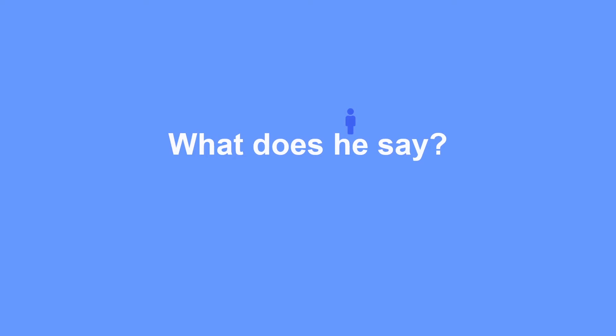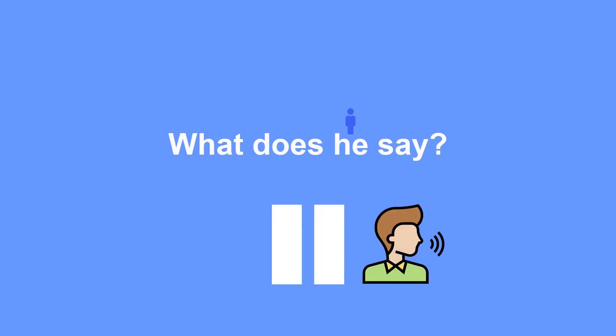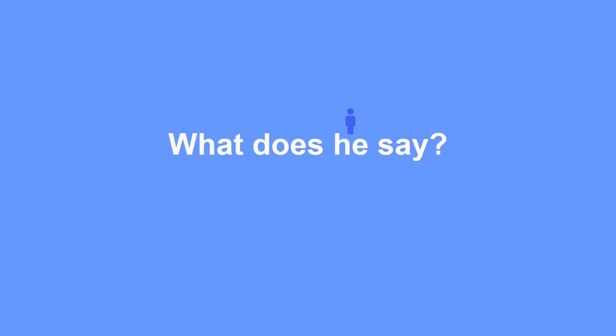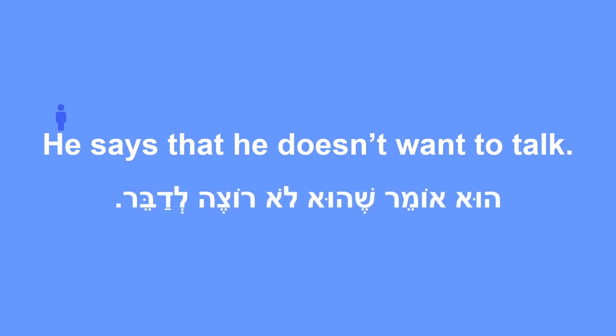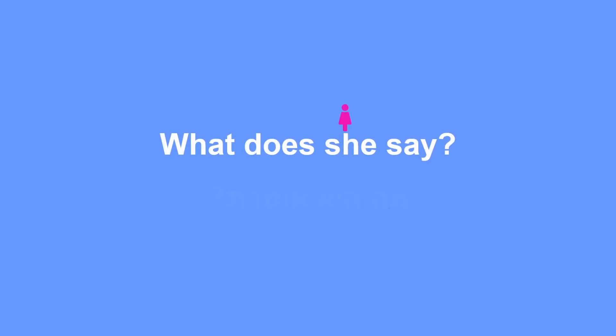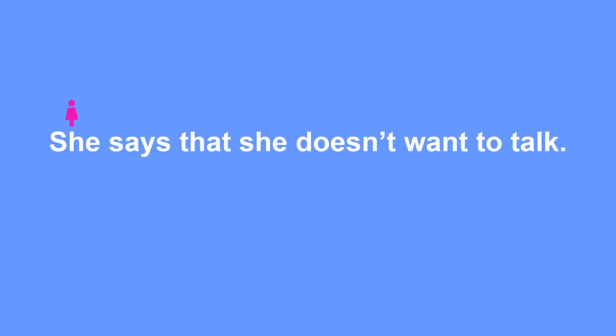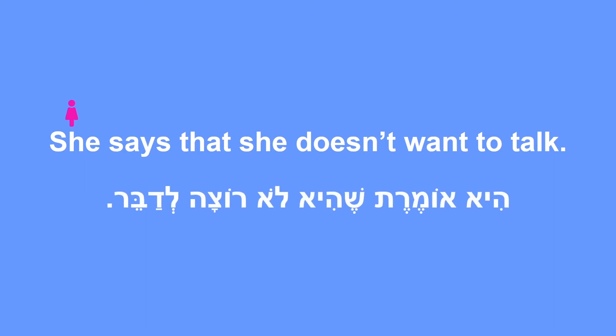Now it's your turn. You see a sentence in English — pause the video, say it out loud in Hebrew, try to translate it, and then play the video again and see if you got it right. What does he say? — Ma hu omer? He says that he doesn't want to talk — Hu omer she hu lo roce ledaber. What does she say? — Ma hi omeret? She says that she doesn't want to talk — Hi omeret she hi lo roce ledaber.